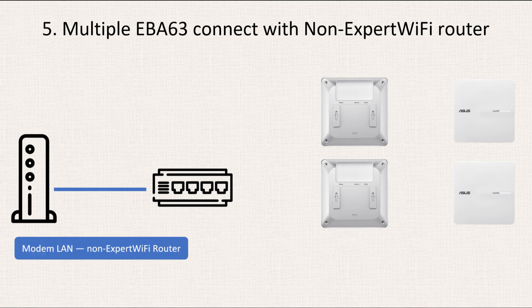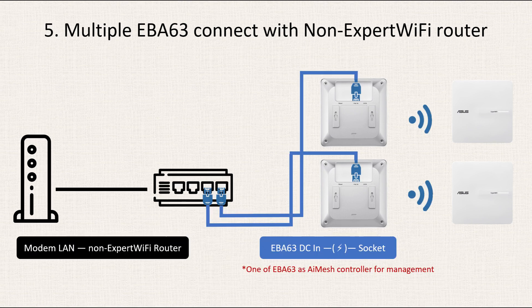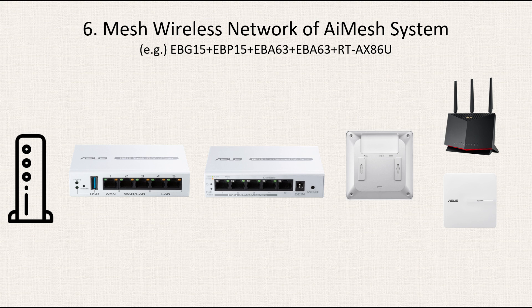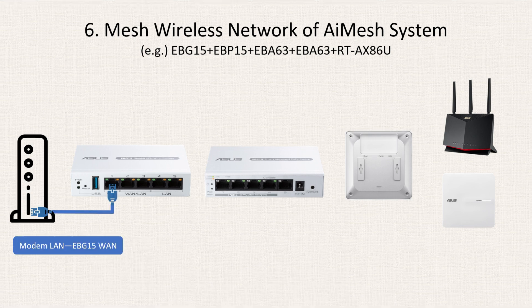Number five: the configuration involves multiple EBA63 units with a non-Expert Wi-Fi router. First, connect the modem's LAN to the non-Expert Wi-Fi router. Second, link the PoE ports of the router to the PoE input of EBA63, and incorporate two additional EBA63 units into the mesh system. Moreover, one of the EBA63 units will be the AI Mesh controller.